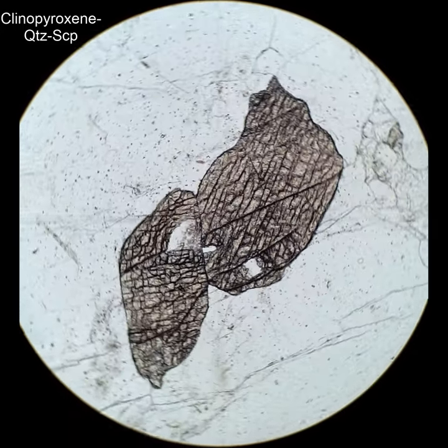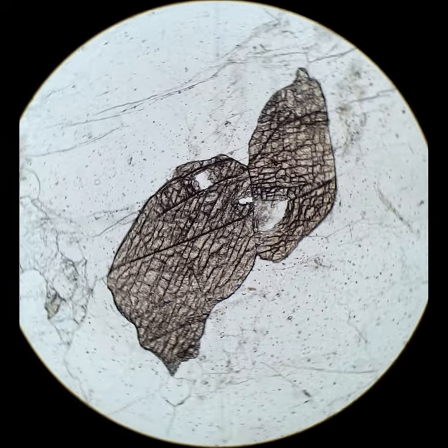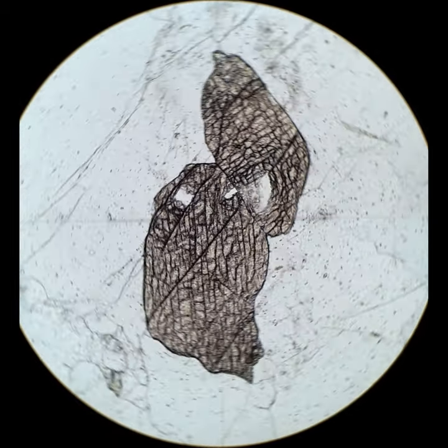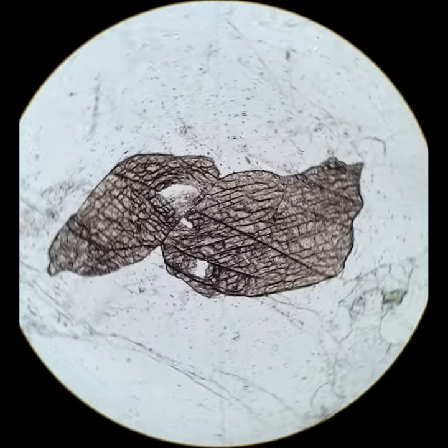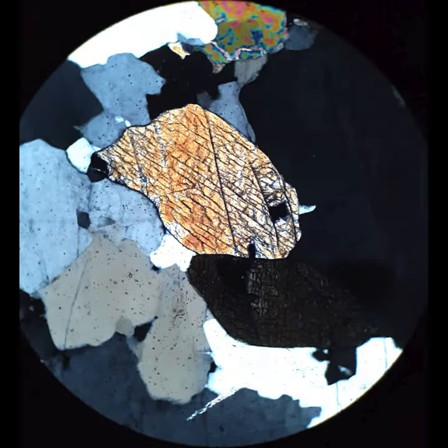The two high-relief grains here are clinopyroxene, probably pretty close to diopside. High-relief, they have kind of crappy cleavage, but it's almost perpendicular cleavages to each other. That's characteristic of clinopyroxene where you're looking at an end section.